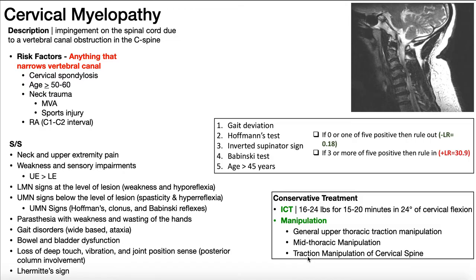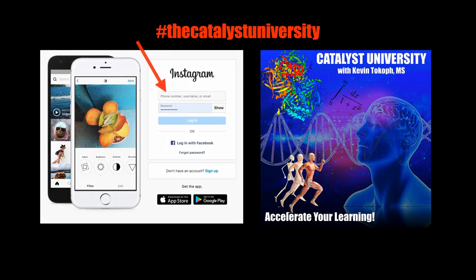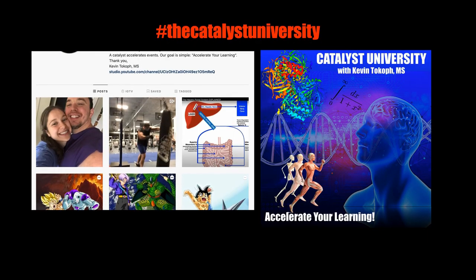The third manipulation option is a traction manipulation of the cervical spine — importantly, this is not a rotational manipulation. You would never do a rotational cervical manipulation on someone with a cervical myelopathy. This is a distraction of the cervical spine in the axial direction only. Your first choice remains intermittent cervical traction plus specific therapeutic exercises targeting the patient's signs and symptoms. Hopefully this video gave you a good understanding of what a cervical myelopathy is, the risk factors, signs and symptoms, and treatment. Thanks for tuning in. Please like, subscribe, and check out my Instagram.